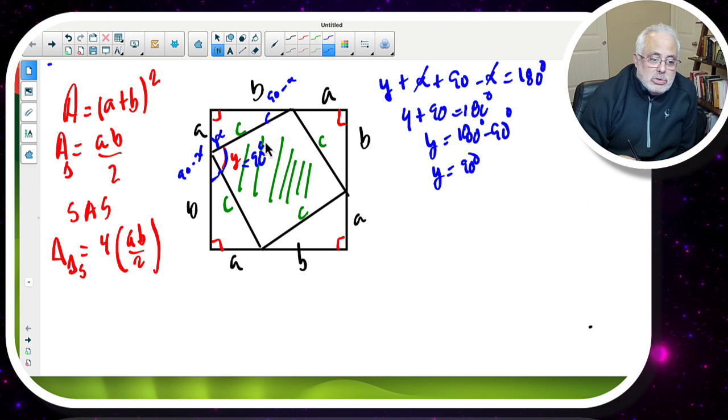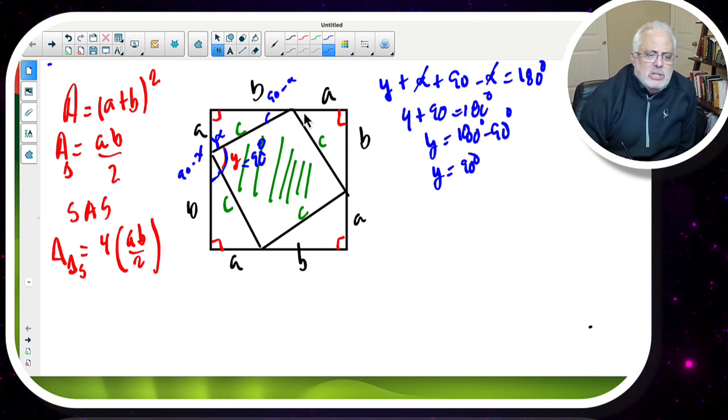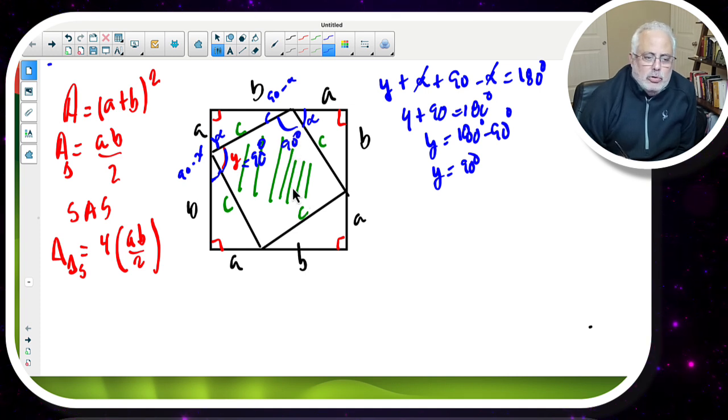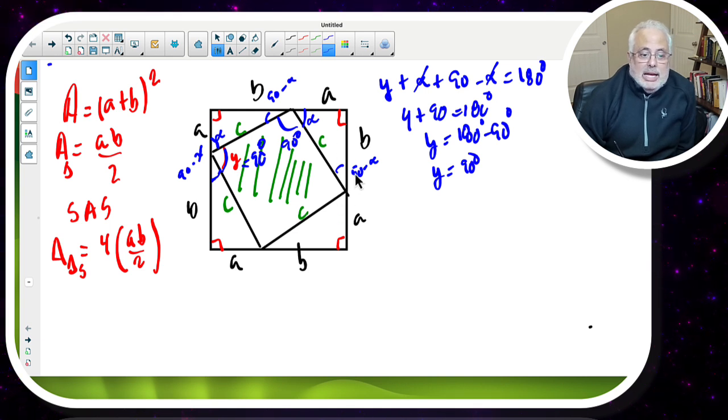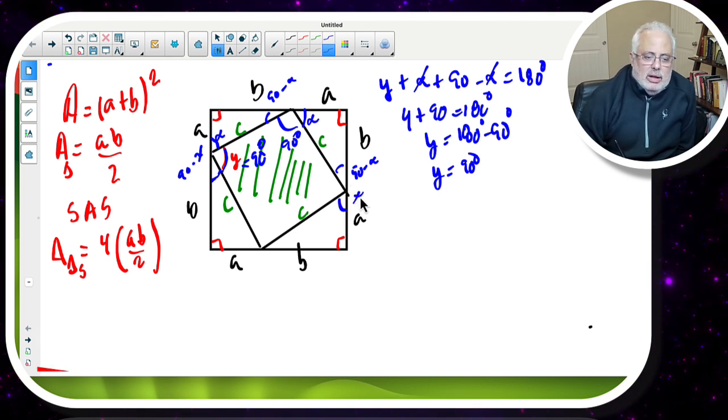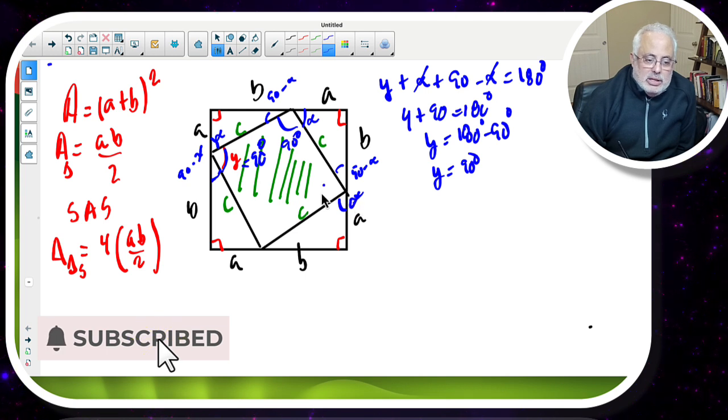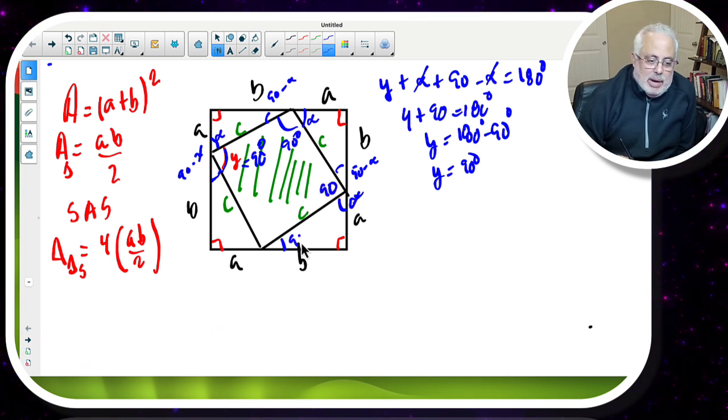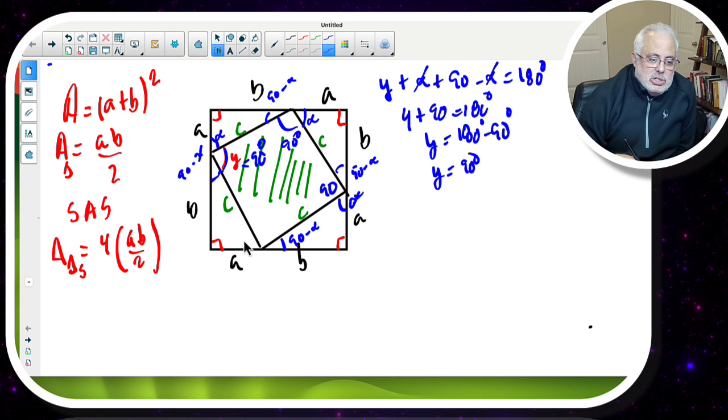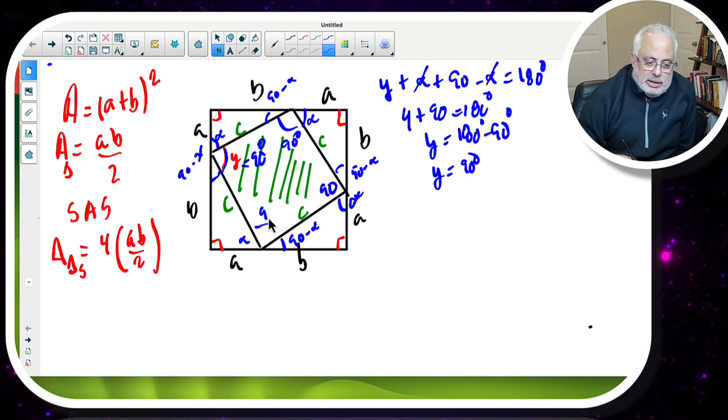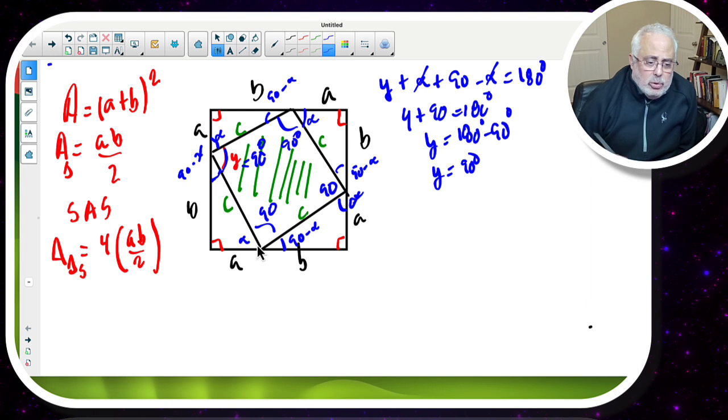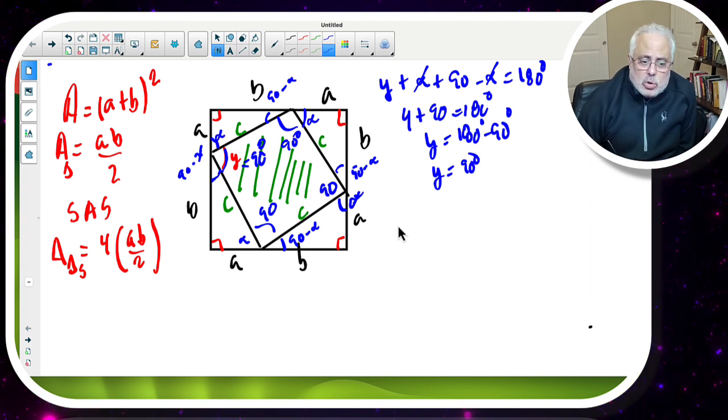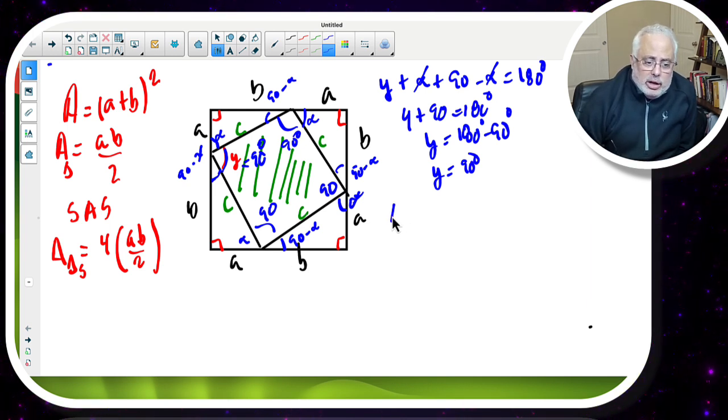So y is 90 degrees. The rest of these angles are the same. This is alpha and this is 90 by the same proof. And this is 90 minus alpha. 90 minus alpha. And this is alpha. And by the same criteria, this is 90. Now we have four equal sides and four right angles. This is a square. And the area of the square is C square. So the area here of that square is C square.